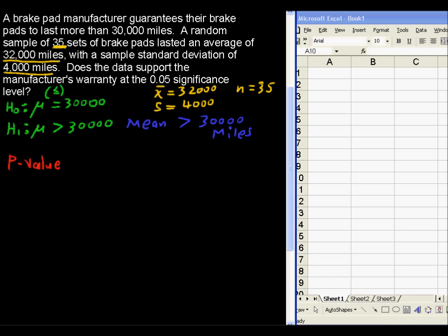Now the p-value is a look at a distribution, and we're going to use a t-distribution because we do not know the population standard deviation. And in fact, this problem specifically says we only have the sample standard deviation. So if it doesn't say population standard deviation, you don't have it.